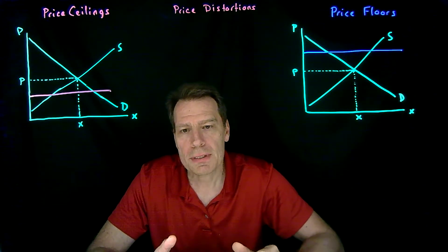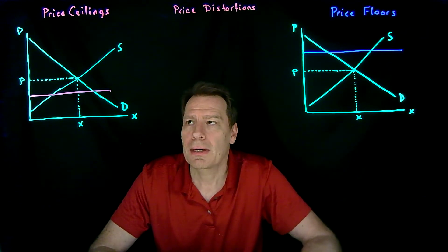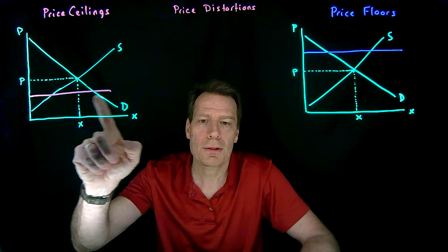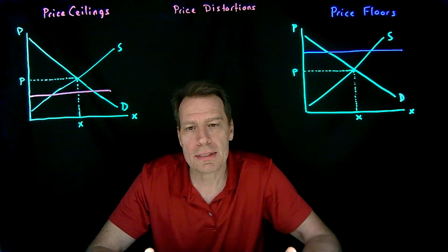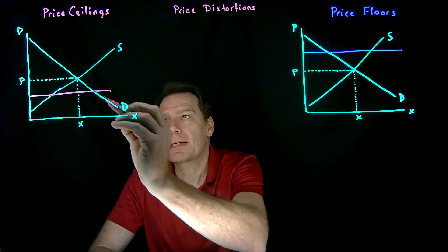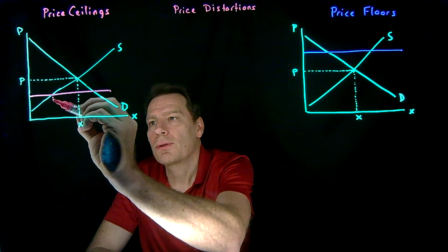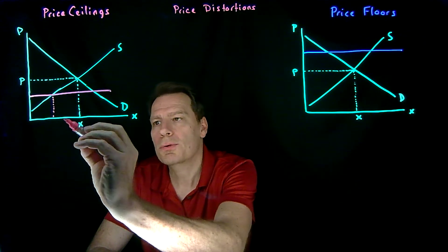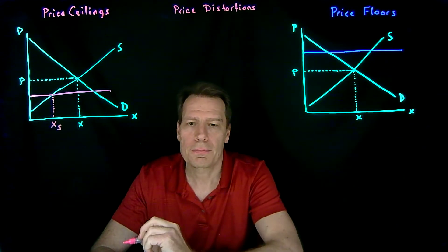In both of these cases, the most obvious result is that the quantity demanded and the quantity supplied is going to change at those price ceilings and price floors. At a price ceiling, firms are no longer going to want to produce the quantity they produced before, so the quantity supplied is going to fall.